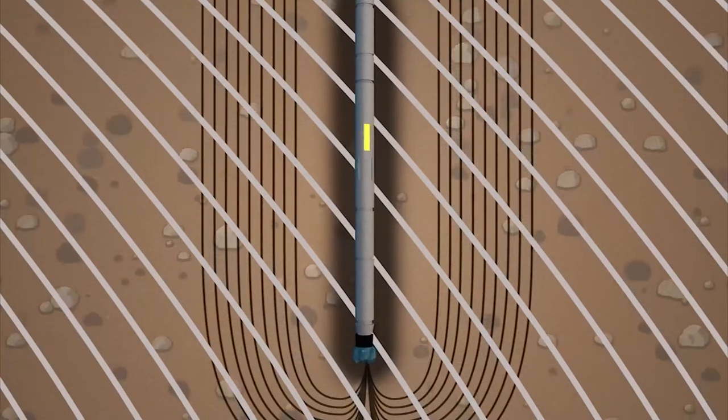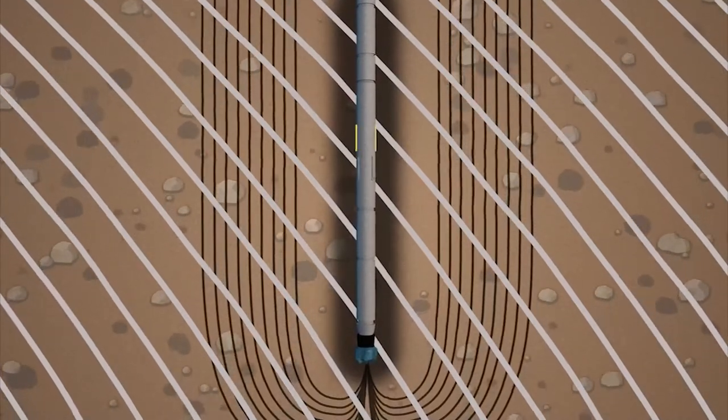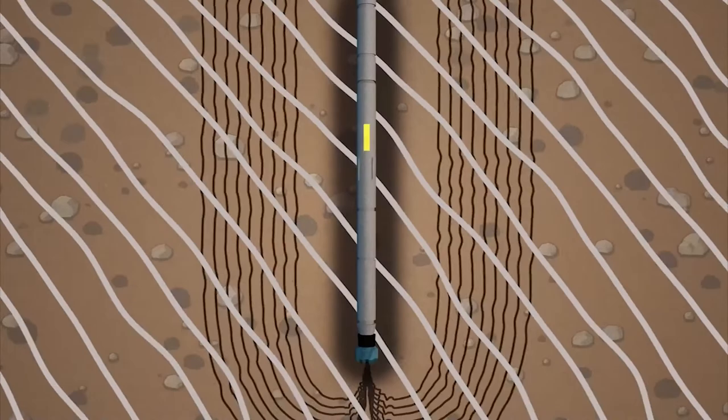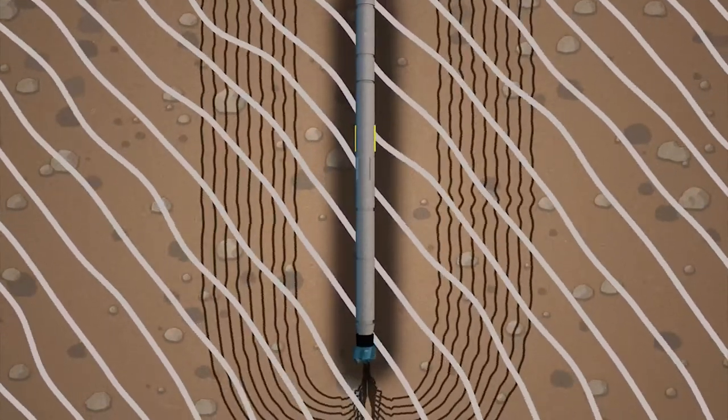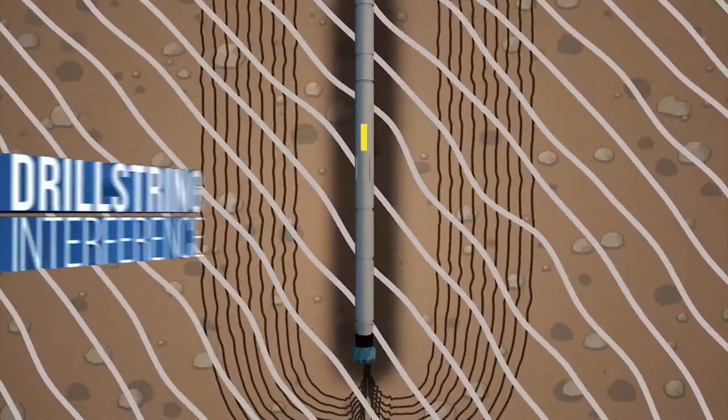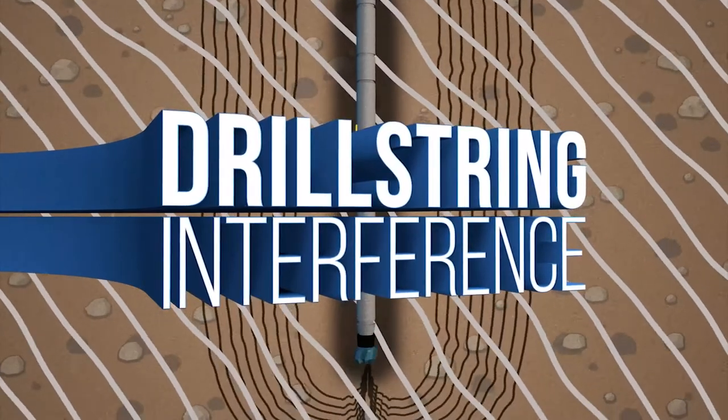leads to a measurement of the Earth's magnetic field overlaid with the magnetic field of the drill string. In this way, the magnetic field associated with the drill string is interfering with our measurement of the Earth's magnetic field. This is drill string interference.